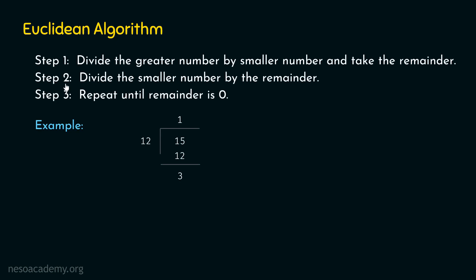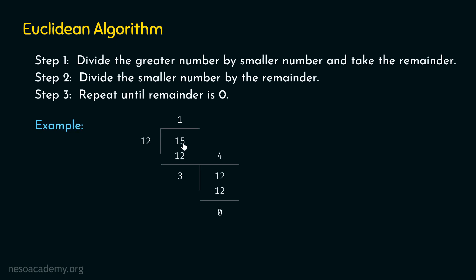In step two, we divide the smaller number by the remainder. Out of 15 and 12, the smaller number is 12. So we divide 12 by 3. We know that 12 is completely divisible by 3, since 3 is a factor of 12. We get zero as the remainder. According to step three, we repeat until the remainder becomes zero. Here the remainder becomes zero, so we stop. The HCF is 3.